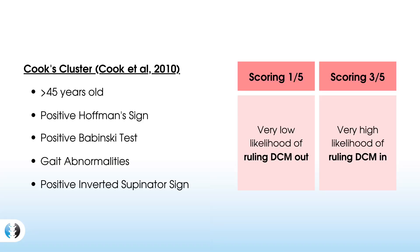If those tests are positive, we're suspecting an upper motor neuron lesion, which could indicate a central spinal cord compression. For more on cervical myelopathy testing, look at Cook's cluster — easily found on Google — which highlights key signs for cervical myelopathy, particularly degenerative cervical myelopathy. The five signs Cook's cluster examines are: age above 45, a positive Hoffman's test, a positive Babinski's test, gait disturbance (since the lower limb may be affected), and a positive inverted supinator sign.